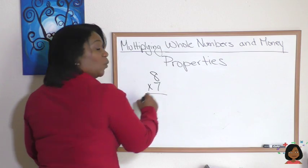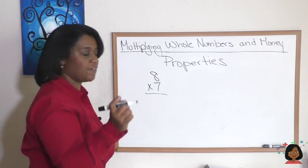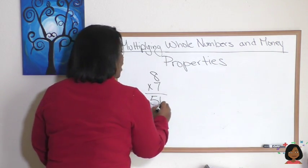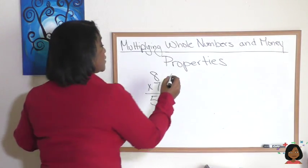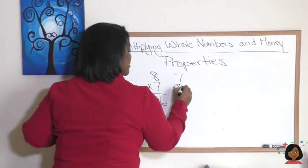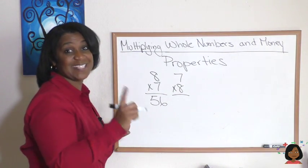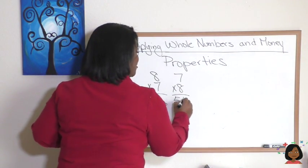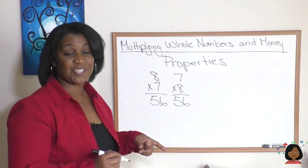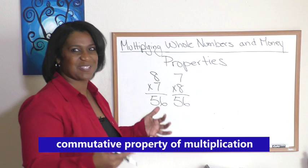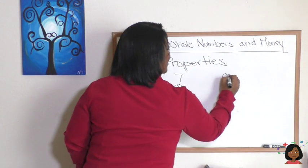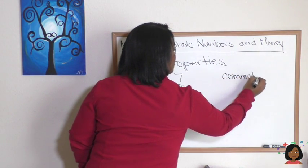Eight times seven—we know eight times seven is 56. But what if we wanted to reverse the order of our two factors? Seven times eight is also 56. So this means that multiplication has a commutative property. There's a commutative property of multiplication.